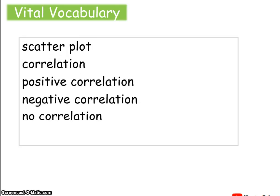Lots of vital vocab this time: scatter plot, correlation. We're going to talk about positive and negative correlations, no correlations, and then something called a trend line.